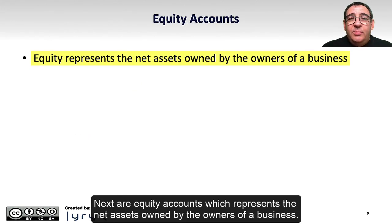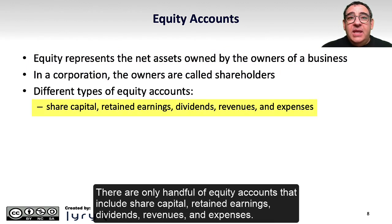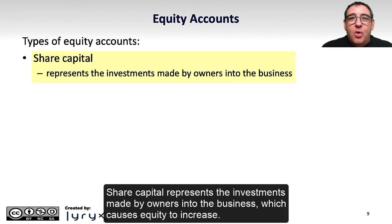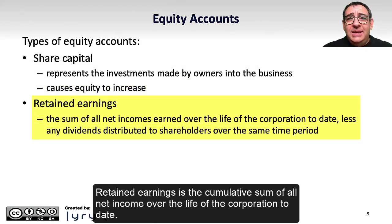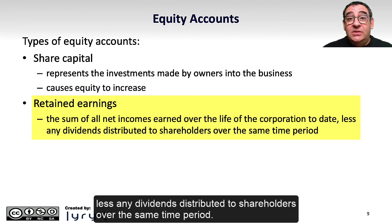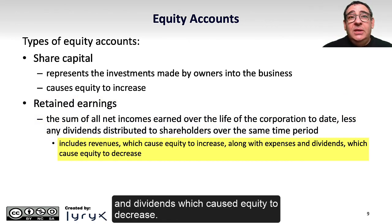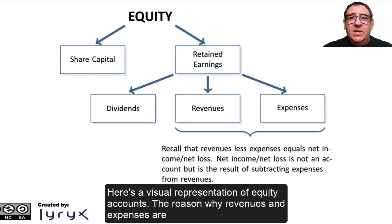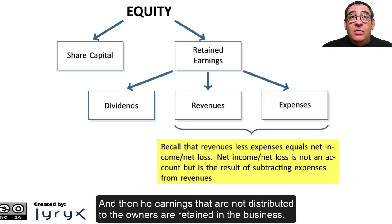Next are equity accounts, which represent the net assets owned by the owners of a business. In a corporation, the owners are called shareholders. There are only a handful of equity accounts that include share capital, retained earnings, dividends, revenues, and expenses. Share capital represents the investments made by owners into the business, which causes equity to increase. Retained earnings is the cumulative sum of all net income over the life of the corporation to date, less any dividends distributed to shareholders over the same time period. Retained earnings includes revenues, which cause equity to increase, along with expenses and dividends, which cause equity to decrease. The reason why revenues and expenses are considered part of retained earnings is because revenues less expenses equals income or earnings, and any earnings not distributed to the owners are retained in the business.